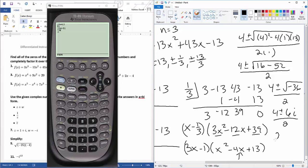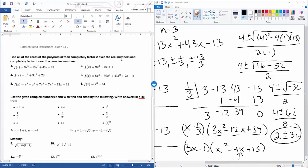So the question is saying find all the zeros, then factor completely over the real numbers and completely factor it over the complex numbers.